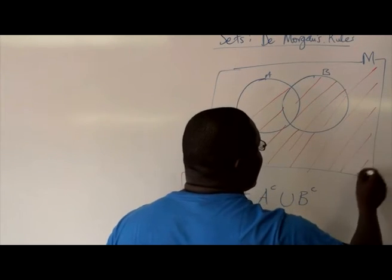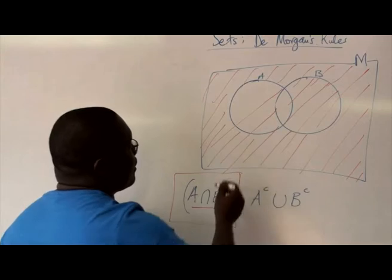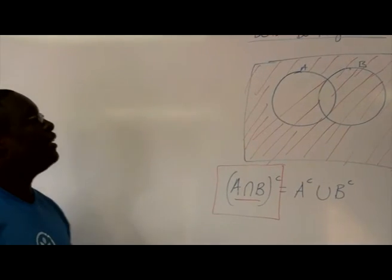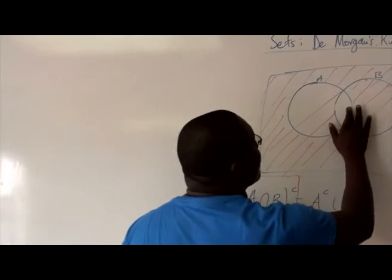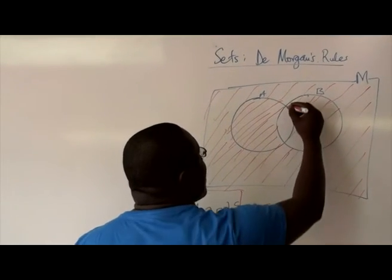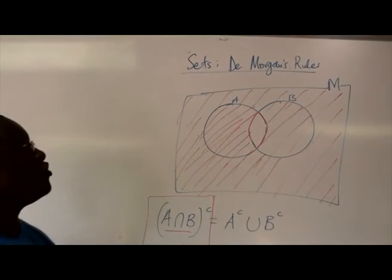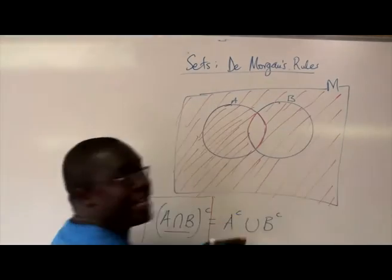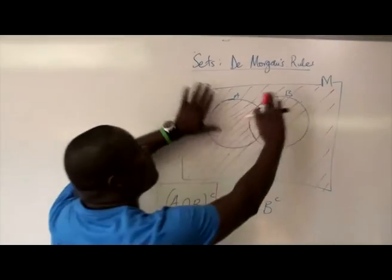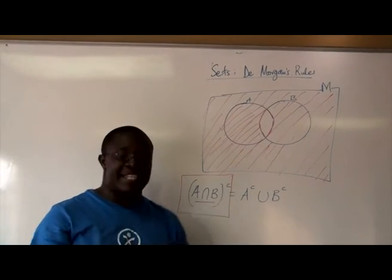Not in A intersection B would be everything else — this whole area. I'm shading everything outside of A intersection B in red. So if something is not in the intersection region, it's everywhere else except that region. I've now completed the left-hand side with the red shading.